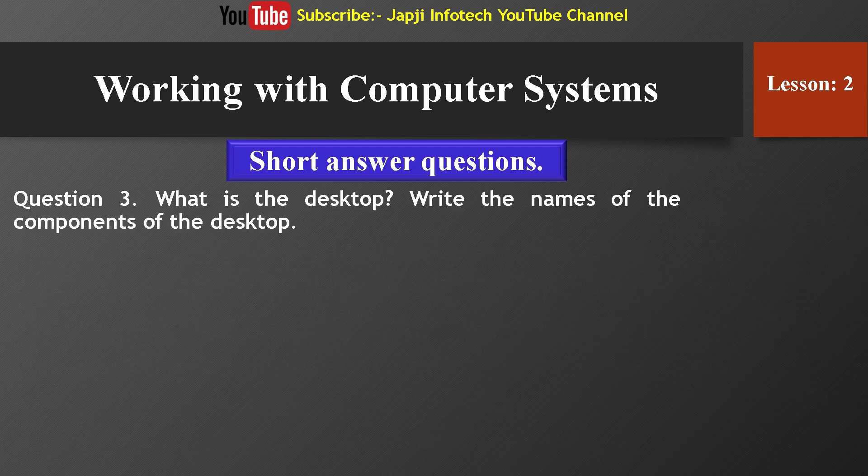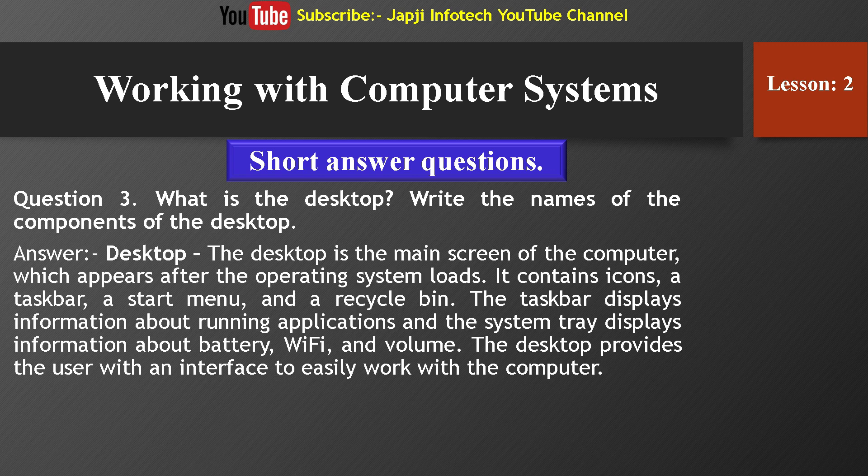Third question: What is the desktop? Write the names of the components of the desktop. The desktop is the main screen of the computer, which appears after the operating system loads. It contains icons, a taskbar, a start menu, and a recycle bin. The taskbar displays information about running applications, and the system tray displays information about battery, Wi-Fi, and volume. The desktop provides the user with an interface to easily work with the computer.